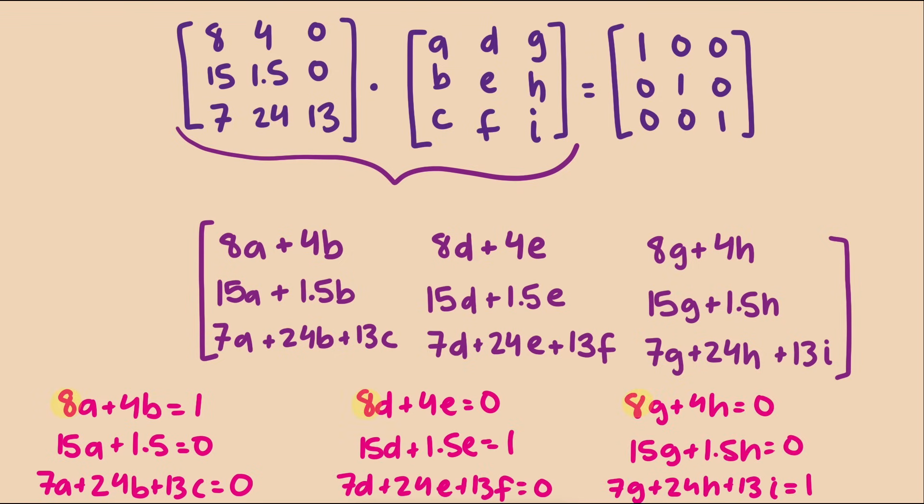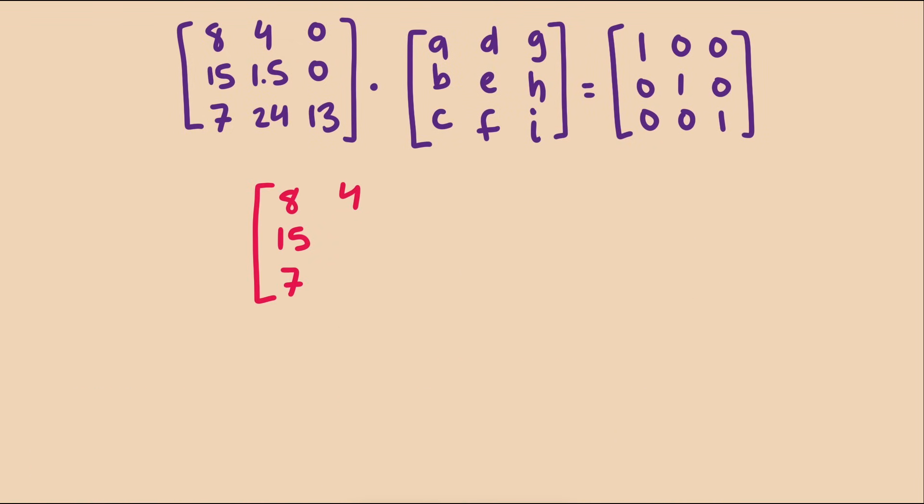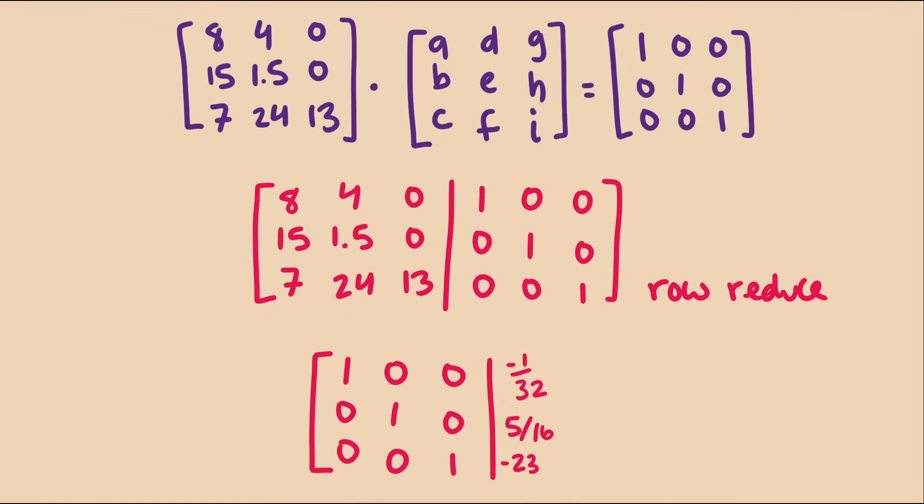But we're actually lucky, because the coefficients on the left hand of the system are all the same. That means we could do the same row operations for each of our three systems. The only thing that would change is the values on the right side. So we can save ourselves a lot of work by solving all three at the same time, by putting the three columns of the identity matrix on the right hand side, then row reducing the left hand side. The right side will then be the three columns of the inverse matrix.